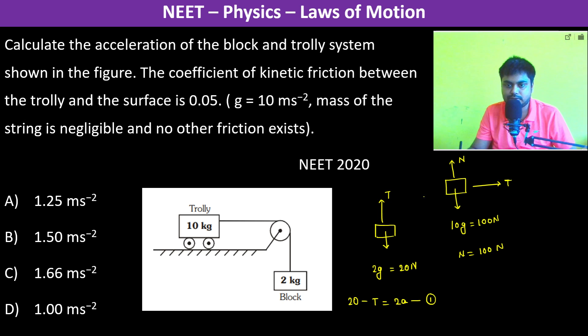...is going to act in this direction because relative velocity is in this direction. So we have mu k into n, which is kinetic friction, which is equal to 0.05 into 100, which is 5 Newtons.